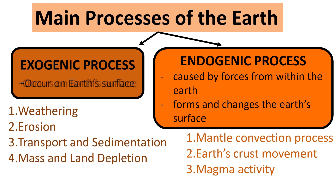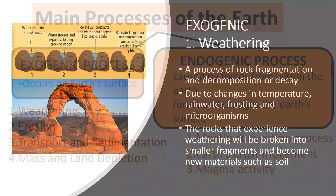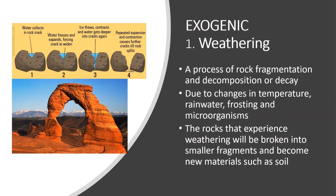Exogenic process is the process that occurs on Earth's surface. Examples of exogenic processes are weathering, erosion, transport and sedimentation, and mass and land depletion. Weathering is a process of rock fragmentation and decomposition or decay.